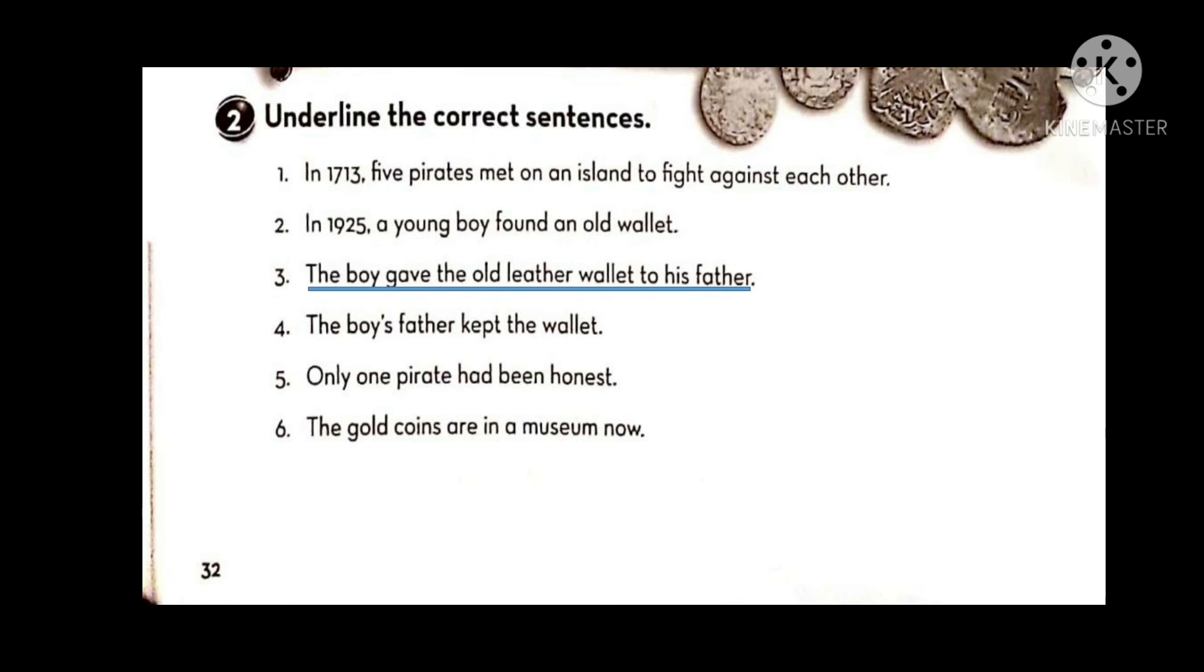Number five: Only one pirate had been honest. This is correct. Excellent, only one pirate had been honest and the four of them were liars. Number six: The gold coins are in a museum now. This is a correct sentence, so underline it. You need to underline numbers three, five, and six.